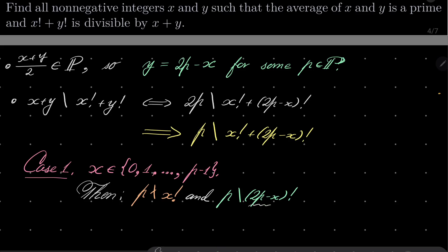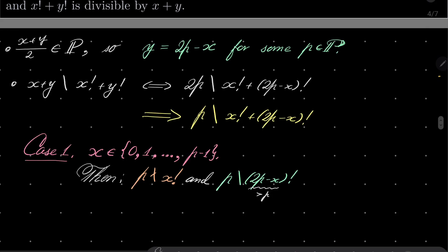But p does divide 2p minus x factorial. Why is that? Well, because this number right here is greater than p, so some number greater than p factorial is divisible by p. But now we have a problem because the sum of two numbers, one of which is divisible by p and the second one is not, is not divisible by p. So no luck in this case.